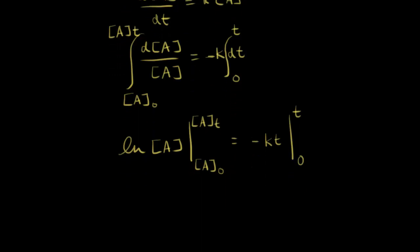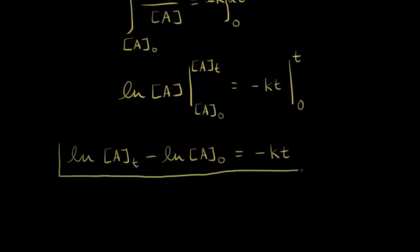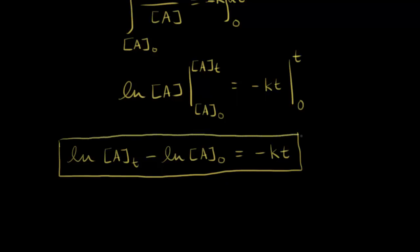Applying the fundamental theorem of calculus, on the left side we get the natural log of the concentration of A at time T minus the natural log of the initial concentration of A. On the right side we get negative kt. This is one way to write the integrated rate law. On the current AP Chem formula sheet, this equation for a first order reaction is your integrated rate law. You could continue and express it in a different way, which we'll do in a later video.